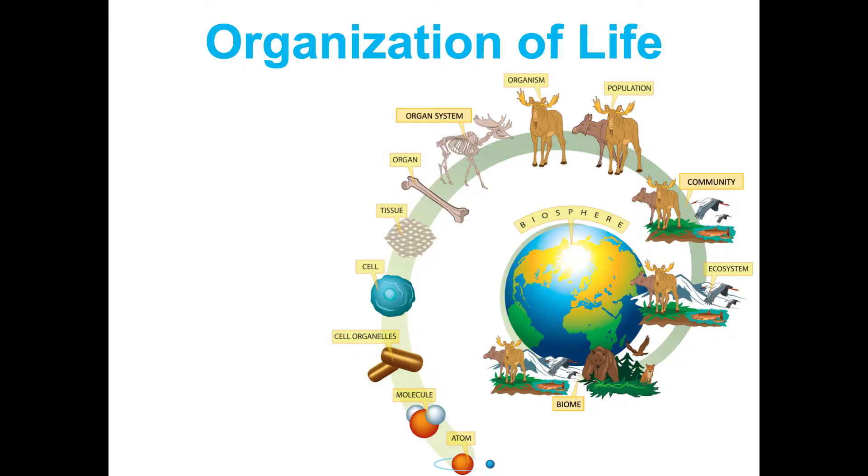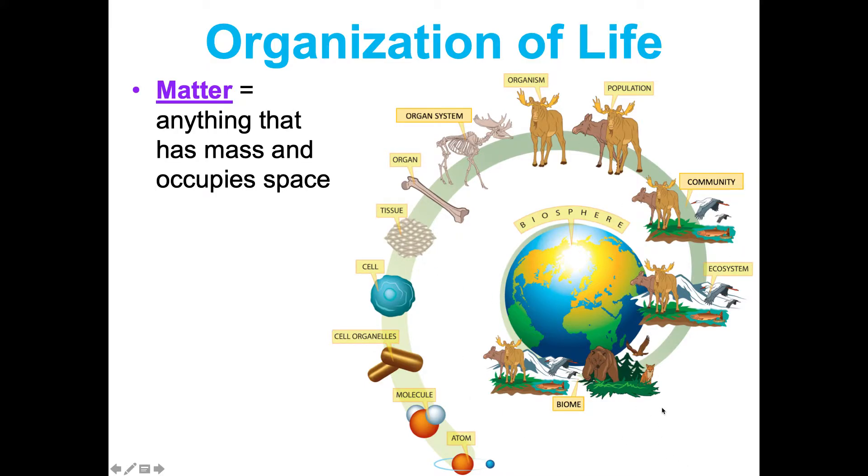One of the things we're going to look at all year is the organization of life and trying to understand how all of these things work together. Matter is anything that has mass and occupies space, and chemistry is all about matter, and matter is made of atoms. An atom is the smallest part of an element, so think about all those things on the periodic table: hydrogen, chlorine, boron, oxygen. It's the smallest part of an element that still has the properties of that element.